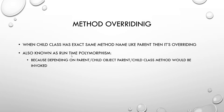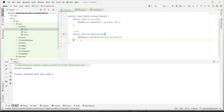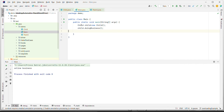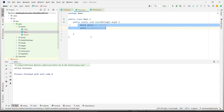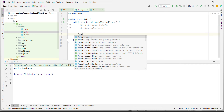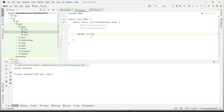Now let's understand why method overriding is known as runtime polymorphism. According to the definition, depending on the parent or child object, the parent or child class method would be invoked. Let's demonstrate this.